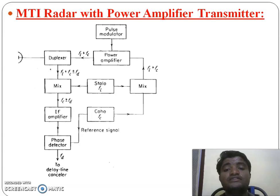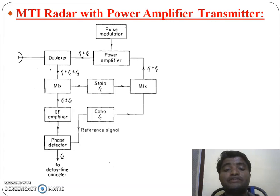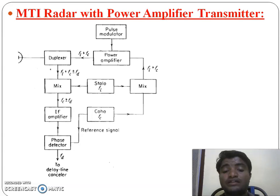In summary, in the power amplifier transmitter we use two stable oscillators: one is the stable local oscillator STALO, and another is the coherent oscillator COHO.